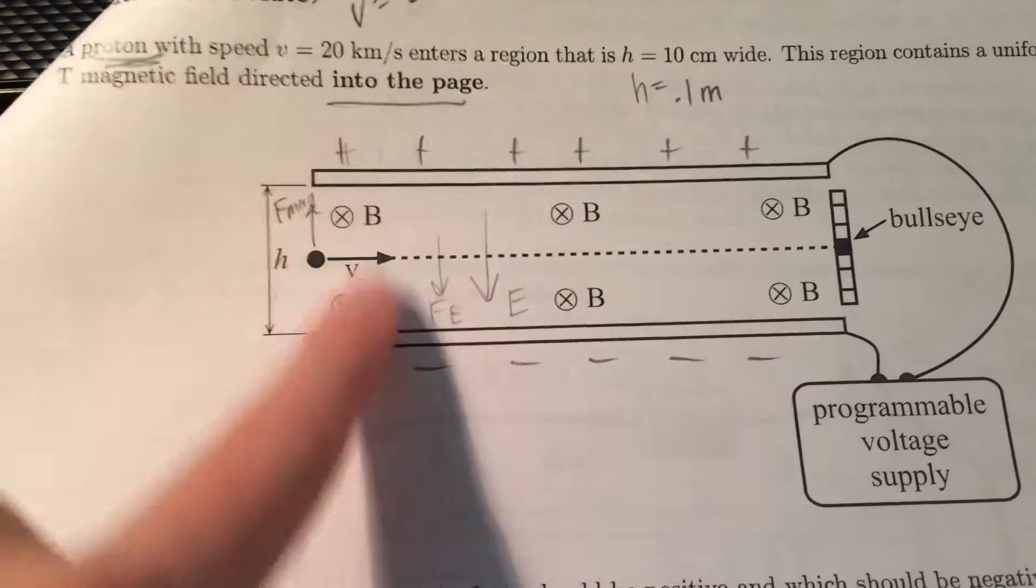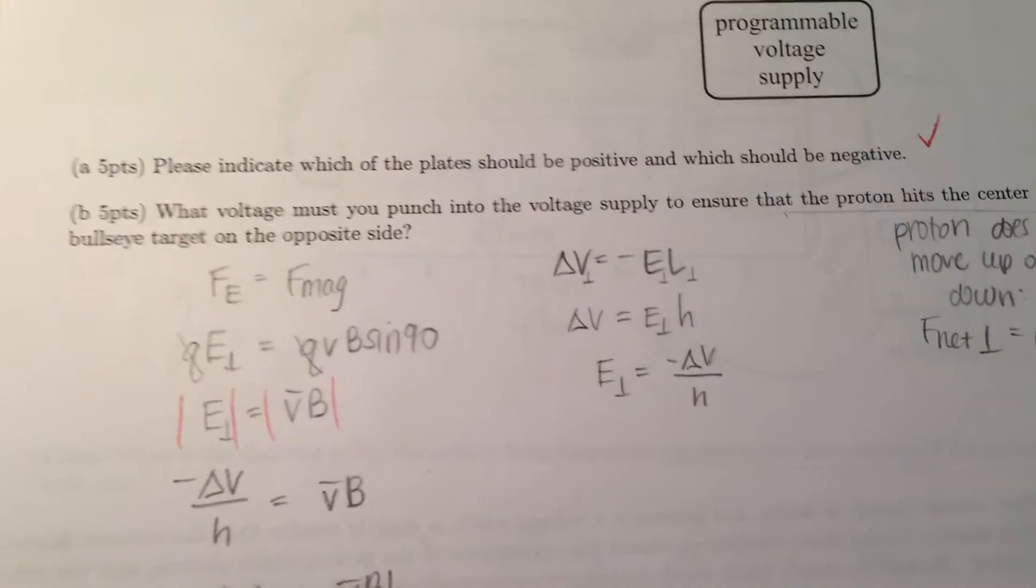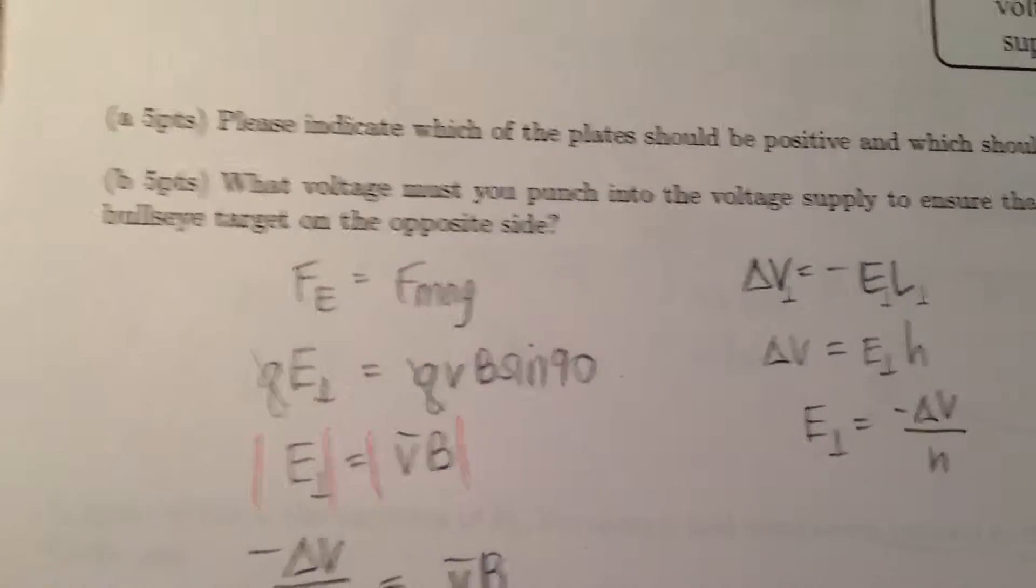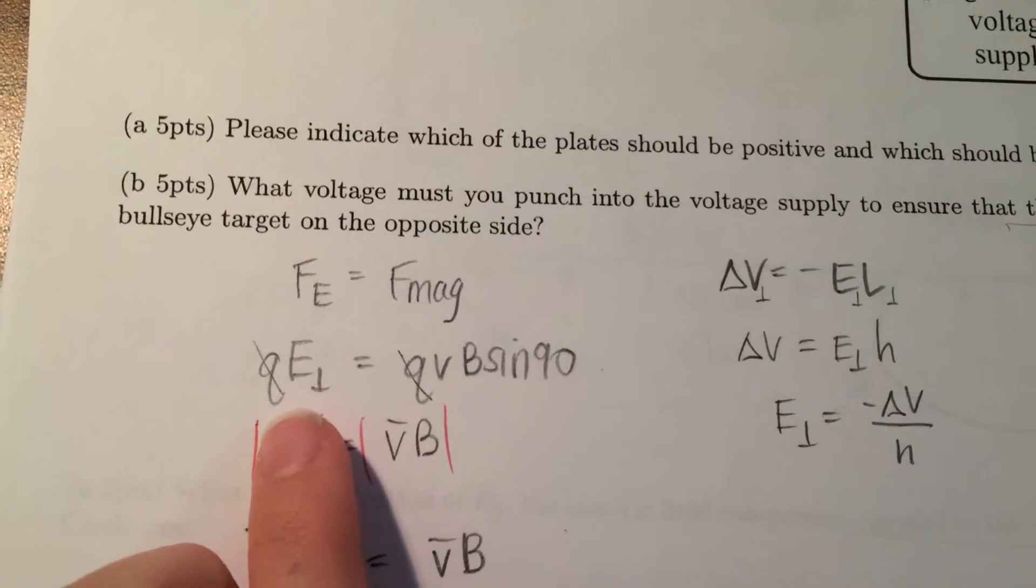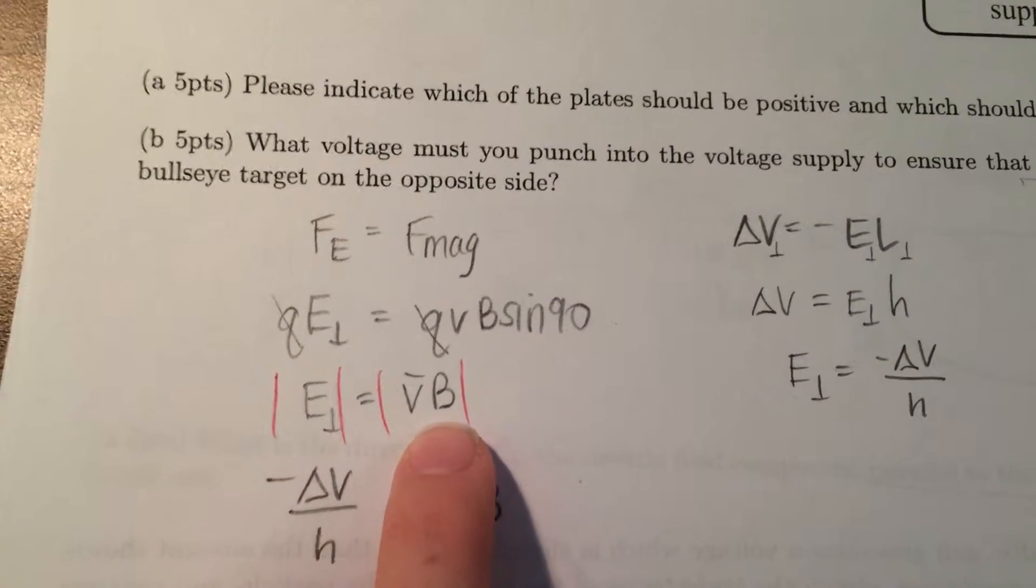So since the magnetic force is up and the electric force is down, that means they are equal to each other, so they cancel each other out. So I set Fe equal to F mag, the charges Q cancel each other out, so you're left with E perpendicular equals drift speed times magnetic field.